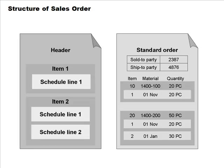The structure of a sales order is similar to other documents we discuss in SAP — purchase orders, maintenance orders, and production orders. Pay attention to the structure of each document type as we cover them.